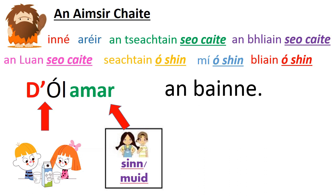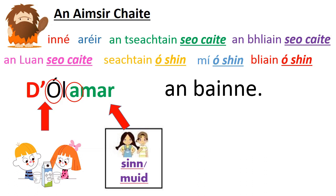Now look at this one: D'ólamar an bainne — we drank the milk. Again — there's a leathan vowel here, and a leathan vowel here. Leathan le leathan — tá seo ceart go leor.